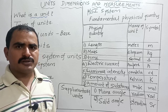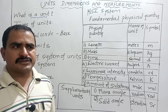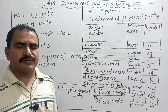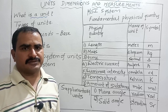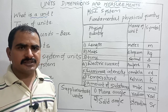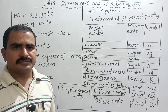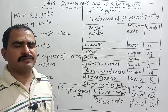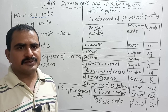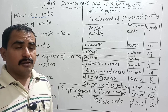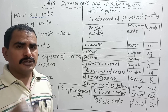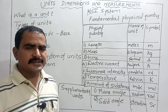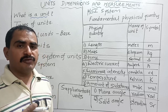If somebody asks about your mass or weight, you should say either 50 grams or 50 kg. If somebody asks what is the temperature, you should say 100 degrees Celsius, 100 Kelvin, or 100 Fahrenheit. So without a unit, any number is meaningless.